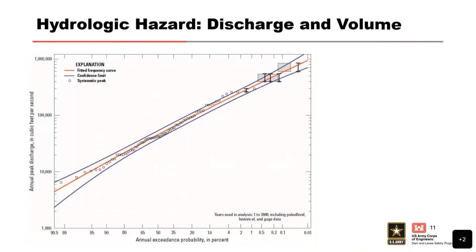There are actually two pieces to developing a hydrologic hazard curve, and the first is the volume frequency curve. On the y-axis we have peak discharge — though we can also look at critical durations for a basin in terms of volume, such as a 3-day critical duration. Note that 'discharge' in H&H doesn't necessarily mean outflow; it just means flow, and in this context we're talking about inflow to the dam.